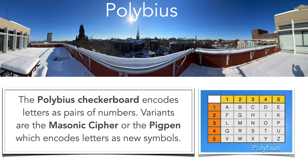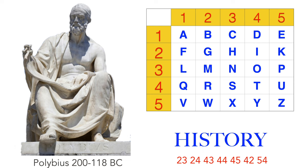Our first example is the Polybius cipher. The alphabet is encoded in a 5x5 square array, so every letter becomes a pair of numbers. The letter O, for example, is encoded as 34. The word 'history' is encoded into a sequence of numbers: 23, 24, 43, 44, 45, 42, and 54.